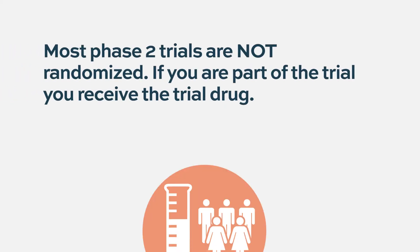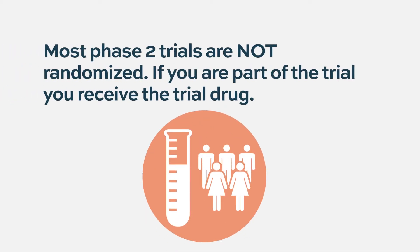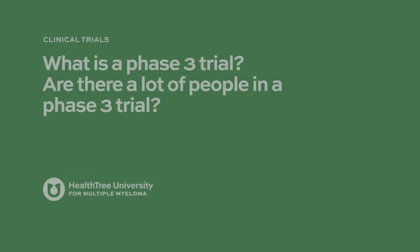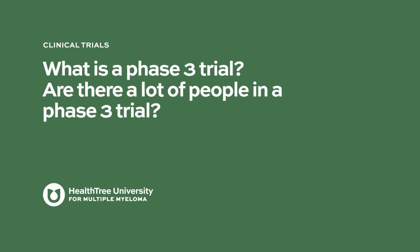Does a phase two trial have one arm or two arms? In general, phase two trials are single-arm trials. There are examples of randomized phase two trials; however, for the most part a phase two trial will be single-armed.